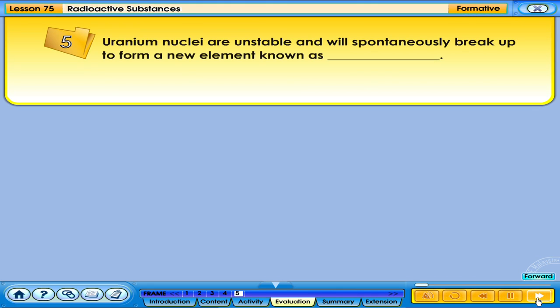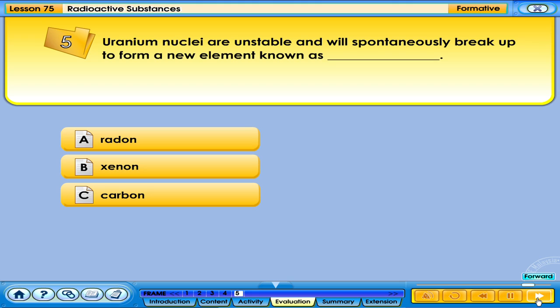Uranium nuclei are unstable and will spontaneously break up to form a new element known as: A. Radon, B. Xenon, C. Carbon, D. Thorium.